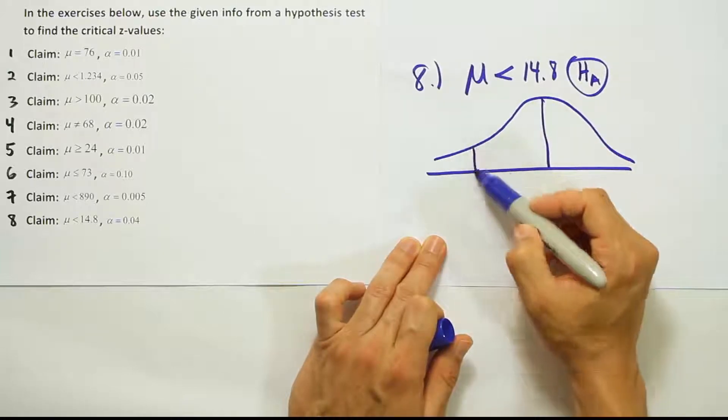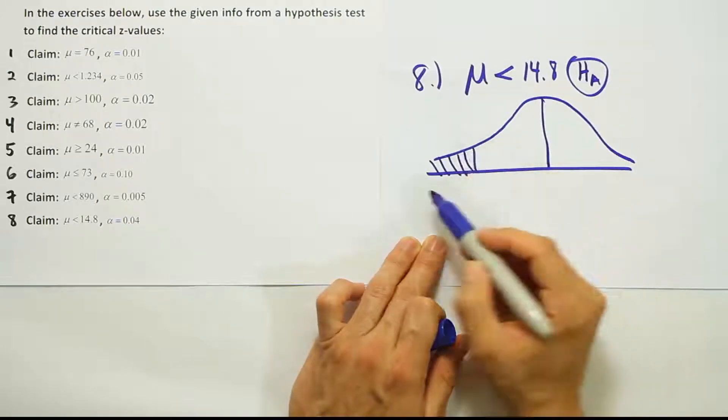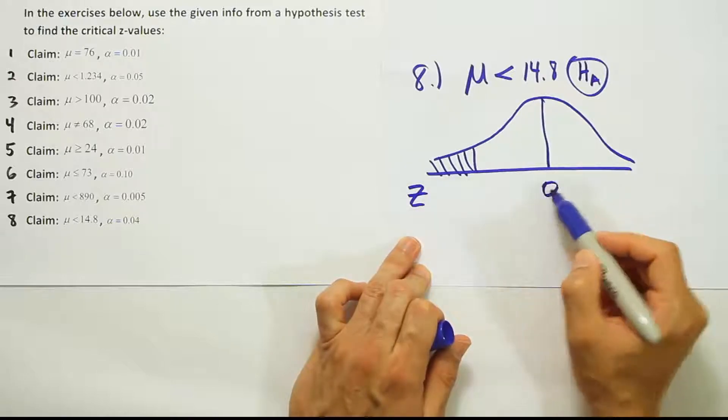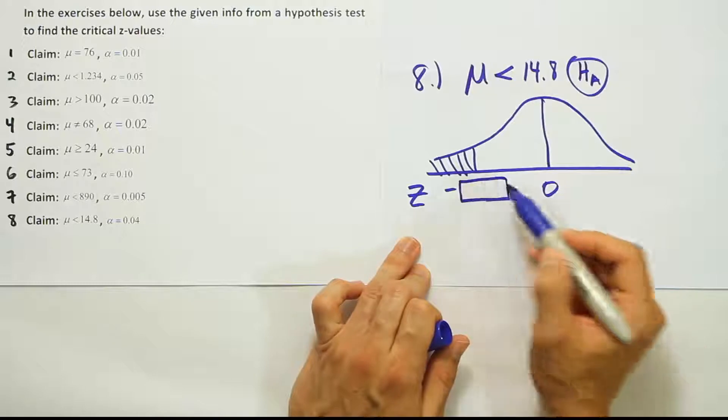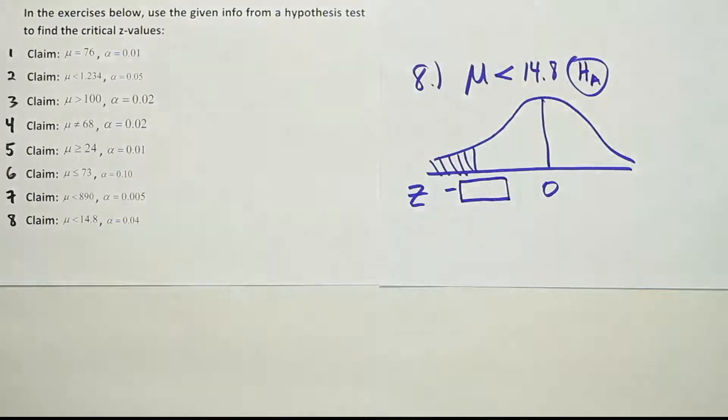So we're going to draw a left tail on our curve. And we're going to be looking for this critical value, which will be negative because it's on the left-hand side of the curve. Okay, so once we have that,